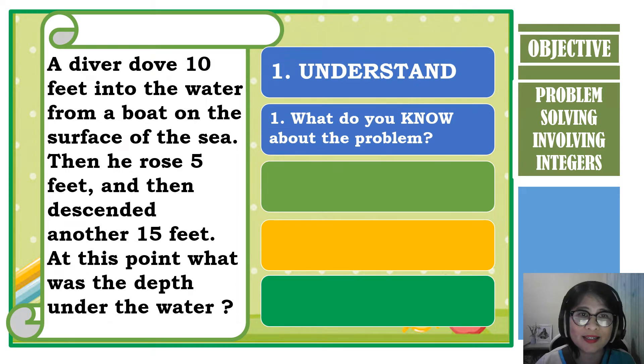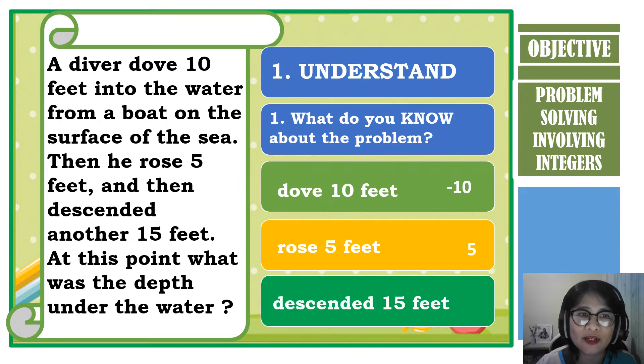Nakakita ba kayo ng keywords sa problem? Yes, we have. The first keyword was dove, which means sumisid or going down. In integers, it means negative 10. The second one was rose, meaning umakyat or going up. In integers, it means positive 5. And the last one was descended, meaning bumaba or going down again. In integers, it means negative 15.